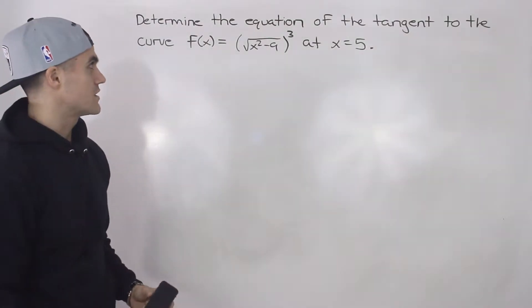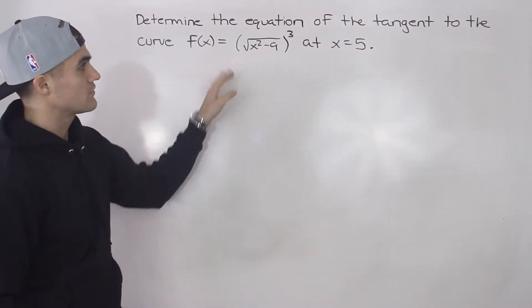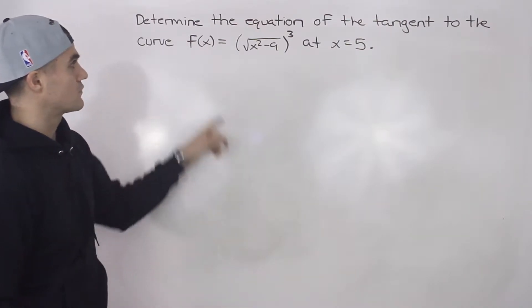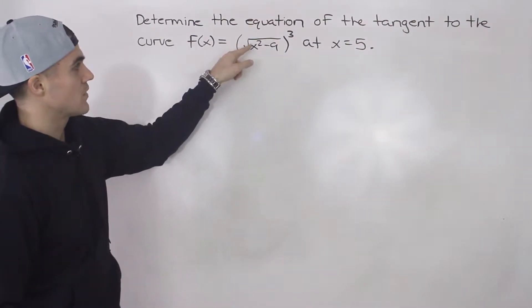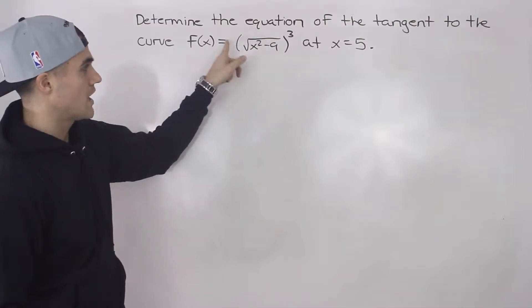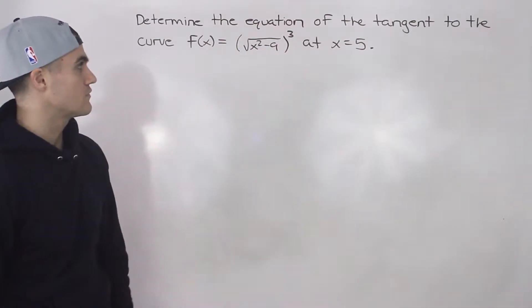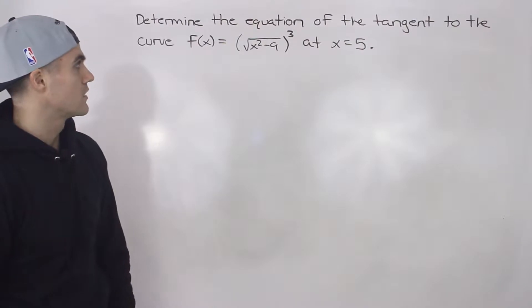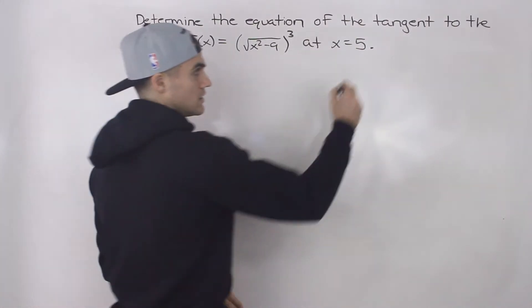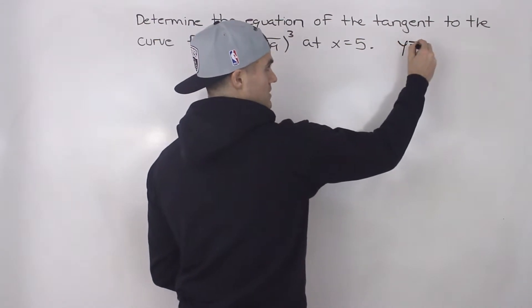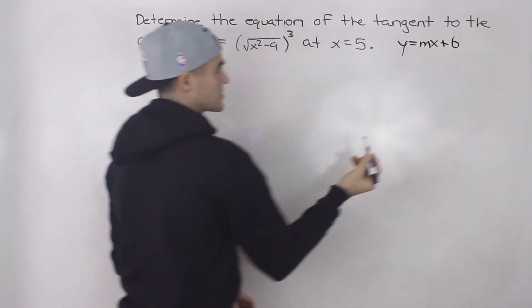Welcome back everybody. Moving on to the next question with derivatives, we have to determine the equation of the tangent to the curve f(x) equals the square root of x squared minus 9, all to the power of 3, at an x value of 5. So we need to find the equation of the tangent — it's a line, so we're basically finding y equals mx plus b.